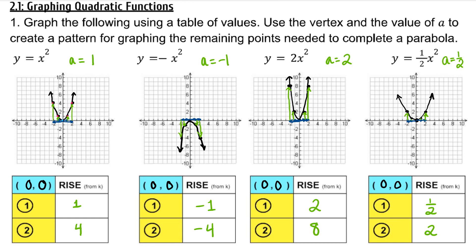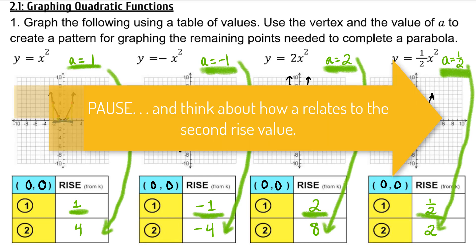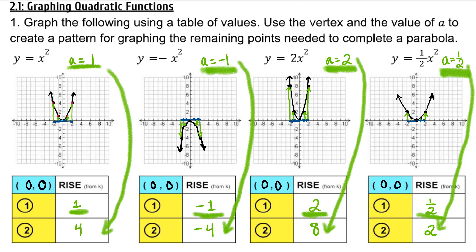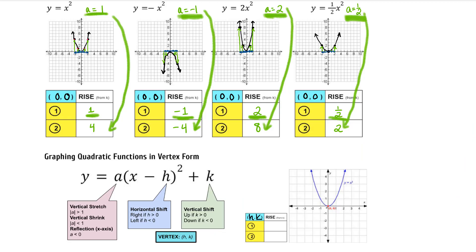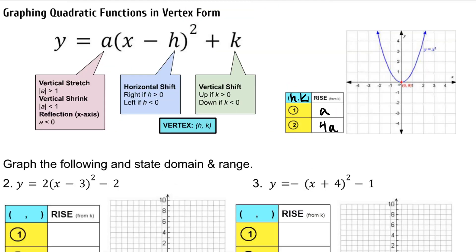So let's see if we can create a pattern. How is a related to the rise? When moving horizontally one unit away from the vertex, the rise is going to be equal to a. When moving two units away from the vertex, each value is multiplying a by 4. So no matter what your vertex is, when you're one unit away you will rise a units — if a is negative, the rise will be downward — and when you're two units away you will rise 4 times a units. This pattern of a and 4a can save a lot of time compared to plugging in a full table of values.